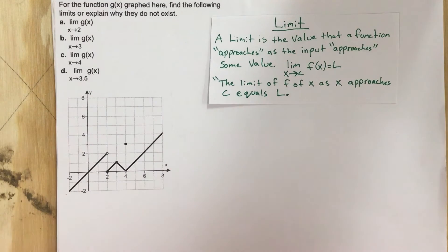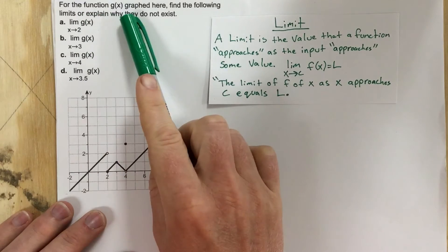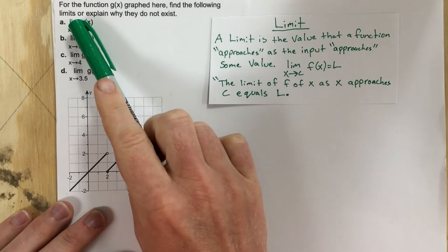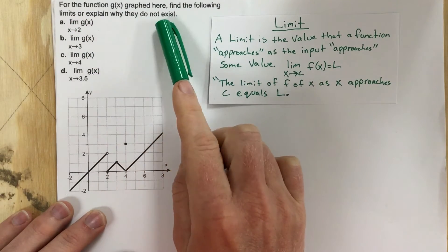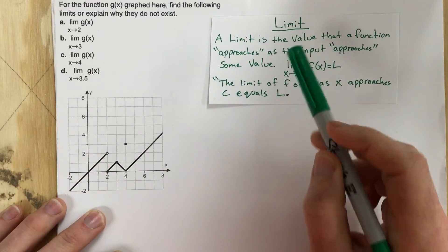This is problem number one from section 2.2. The problem says for the function g of x graphed here, find the following limits or explain why they do not exist. So let's talk about what a limit is.